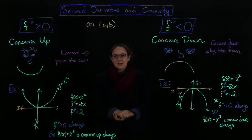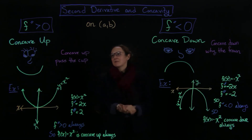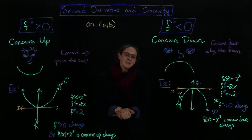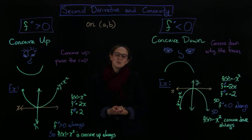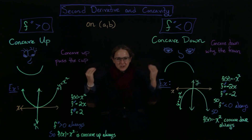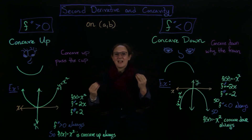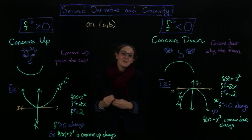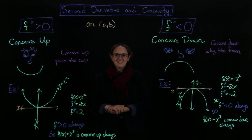There's a cute little rhyme to help you remember: concave up past the cup — because it looks like a cup — and concave down, why the frown. And f(x) = x² and f(x) = −x² are perfect pictures to keep in mind because they always have the same concavity. Okay, that made some sense. I'll see you in the next lecture — thank you so much, bye!